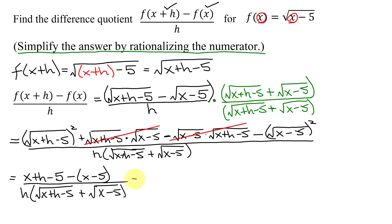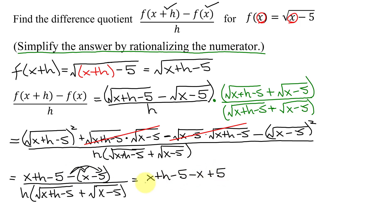Now we simplify the numerator. We get x+h minus 5. Distributing the negative: negative 1 times x is negative x, and negative 1 times negative 5 is positive 5. All divided by that denominator.